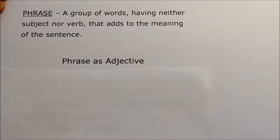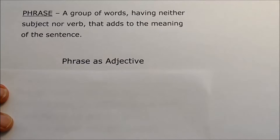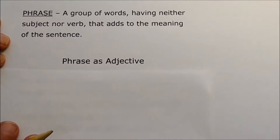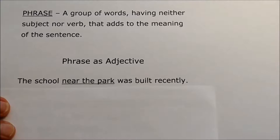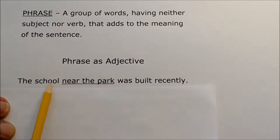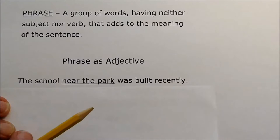Normally when we think of an adjective, we think of one word: the brown horse, the blue book, the hot day. But when we use phrases as an adjective, we're talking about using a group of words as an adjective. This might be a new idea for you. Let's take a look at this sentence: The school near the park was built recently. School is the subject, was built is the verb, recently is an adverb. But near the park — that's not a sentence. It has no subject and no verb. It's a group of words that describes school. That phrase is an adjective.